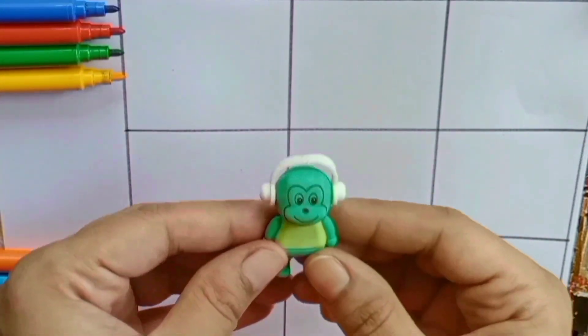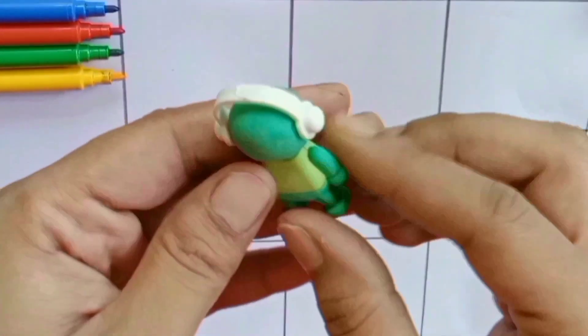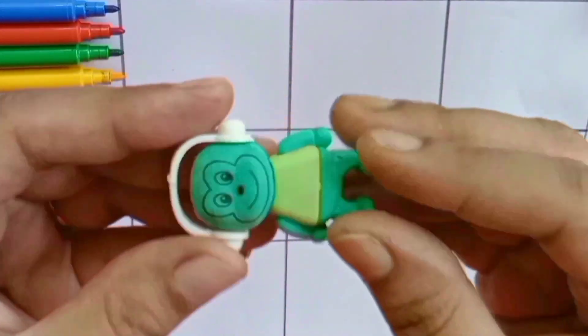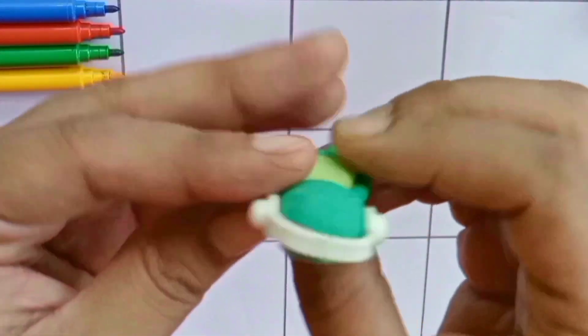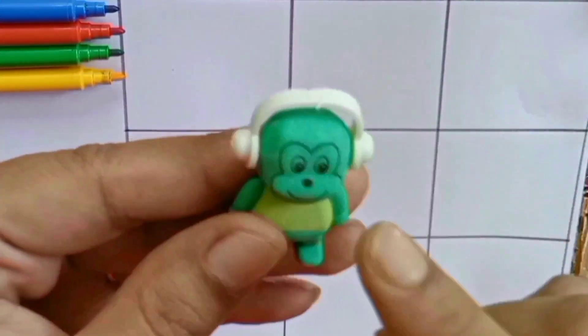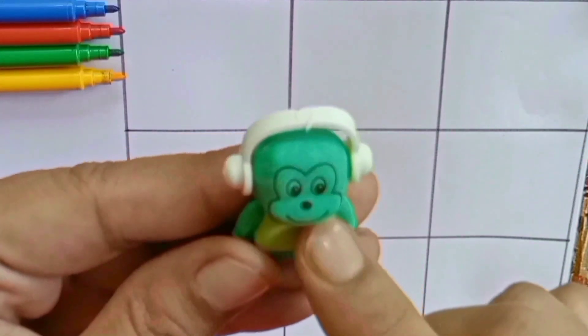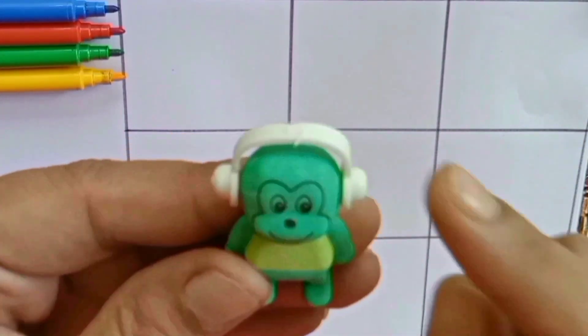This is so cute. You can also separate the parts. Light green color, green color, white color. He is listening to songs.